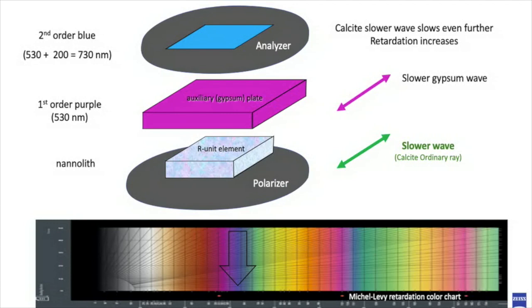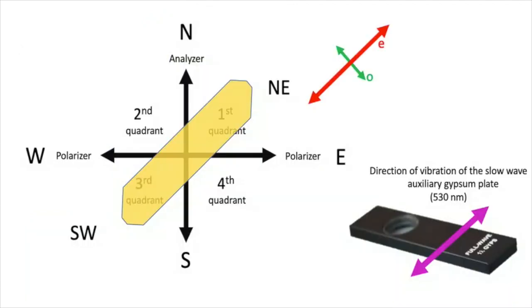And this corresponds to the second order blue on the Michel Levy chart. So, under cross polars, when we insert the gypsum plate and the retardation color changes from white to yellow, that means that the crystal has its optical axis and plane of vibration of the extraordinary ray in the north-east-south-west direction.